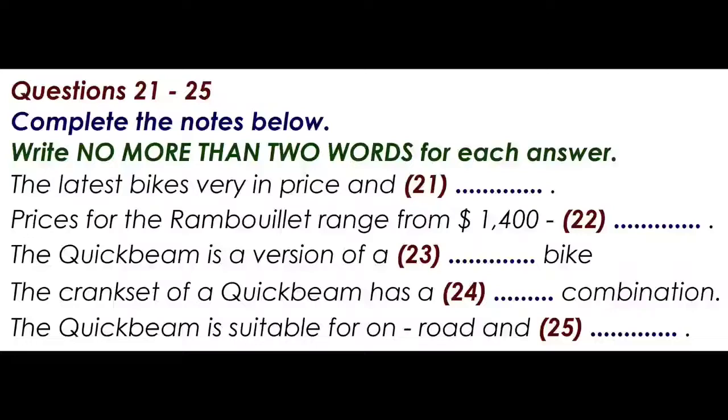The Rambouillet, our all-around road bike, is available either as a frame with fork and headset for $1,400, or as a complete bike for $2,300. Compared to the Atlantis, it is a lighter frame, not intended for loaded touring or rough trail riding. As a road bike, it has side-pull brakes.